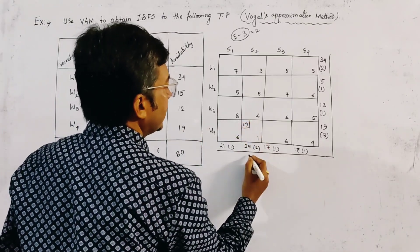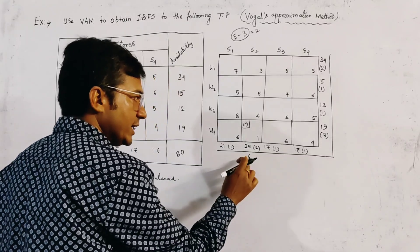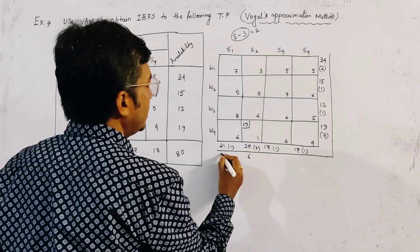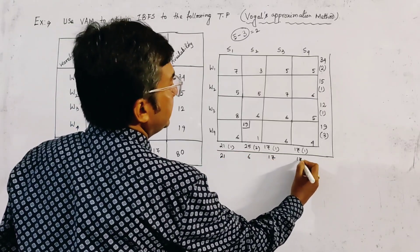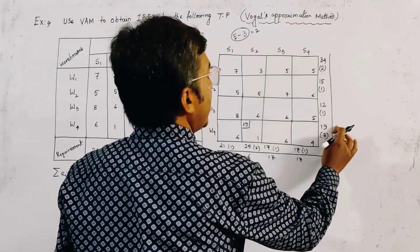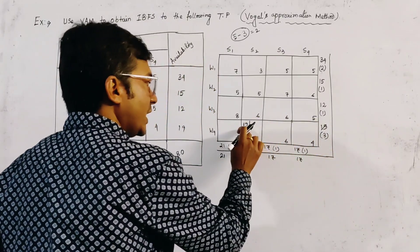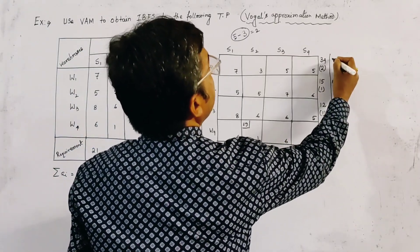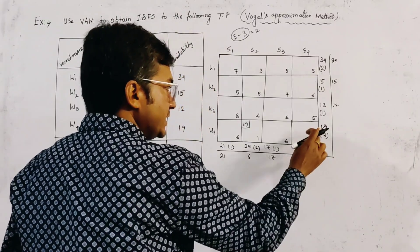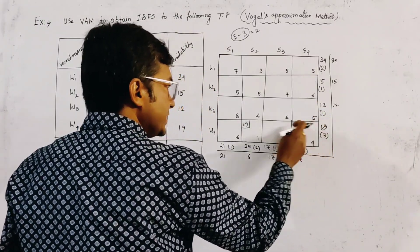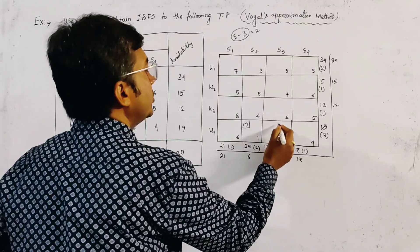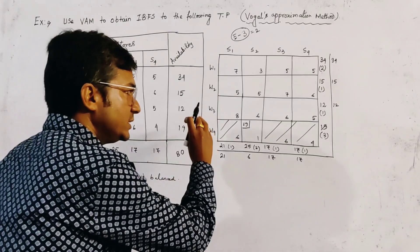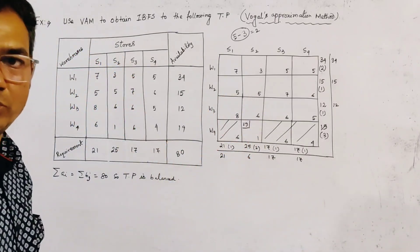Out of 25 units required, we gave 19, so we still need another 6 units. We write 25 minus 19 equals 6 for the remaining demand. The other column demands remain 21, 17, and 17. Since the availability of this row is exhausted, we cross off the fourth row, indicating this row has no further part in the solution.